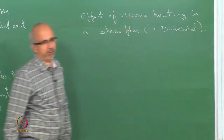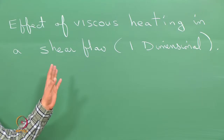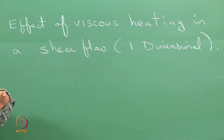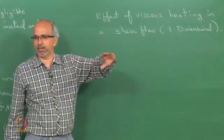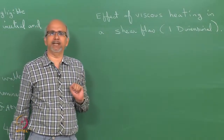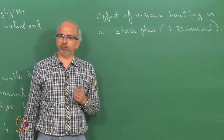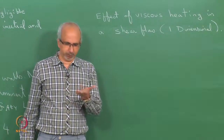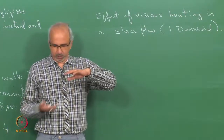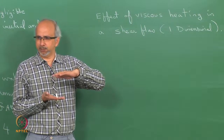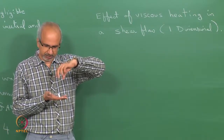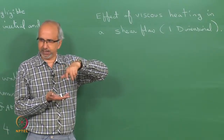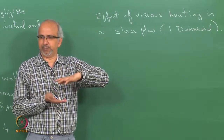We will consider viscous heating in a one-dimensional shear flow. Our objective is just to illustrate the idea, so we are going to keep the math as simple as possible, restricting our analysis to a one-dimensional problem. The applications are basically in viscometry. How do you measure the viscosity of a fluid? You put it in a viscometer — you have a stationary wall at the bottom and usually a cylindrical surface on top that is rotating. You know the shear rate, you measure the shear stress, and you find the viscosity of the fluid.